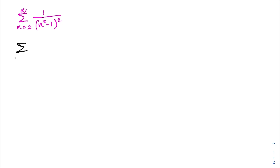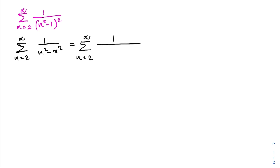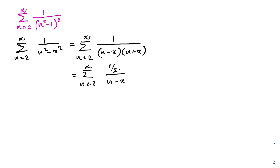I am going to take another infinite sum: the sum from n=2 to infinity of 1 over n² minus x². In the denominator we can find the partial fractions. We know the difference of two squares, so we can write (n minus x)(n plus x). Using the cover method we can easily find the partial fractions: 1 over 2x times 1/(n minus x), minus 1 over 2x times 1/(n plus x).